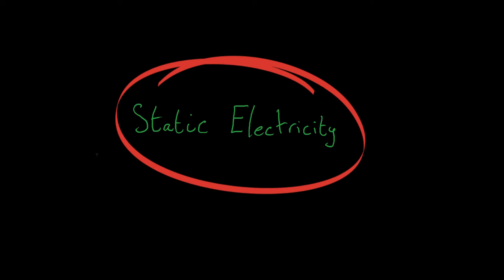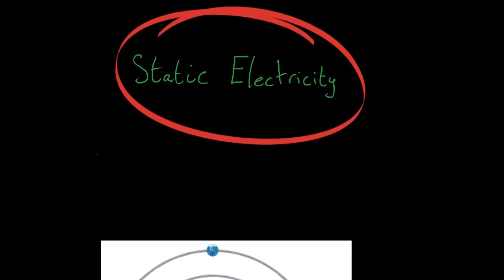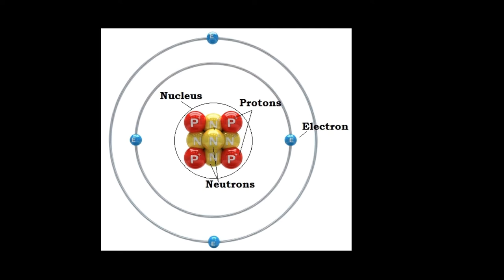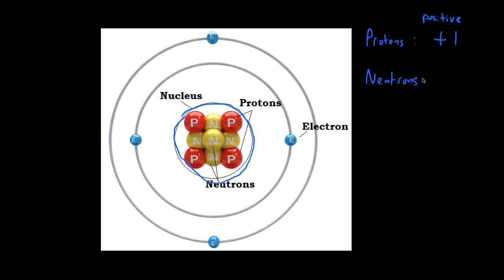First, as a recap, we need to know the structure of an atom. Here you can see a diagram of an atom. It's made up of the nucleus — this part in the center — and in the nucleus you have protons and neutrons. Protons have a plus-one charge, meaning they are positively charged. Neutrons have absolutely no charge; they're neutral — that's why they're called neutrons.